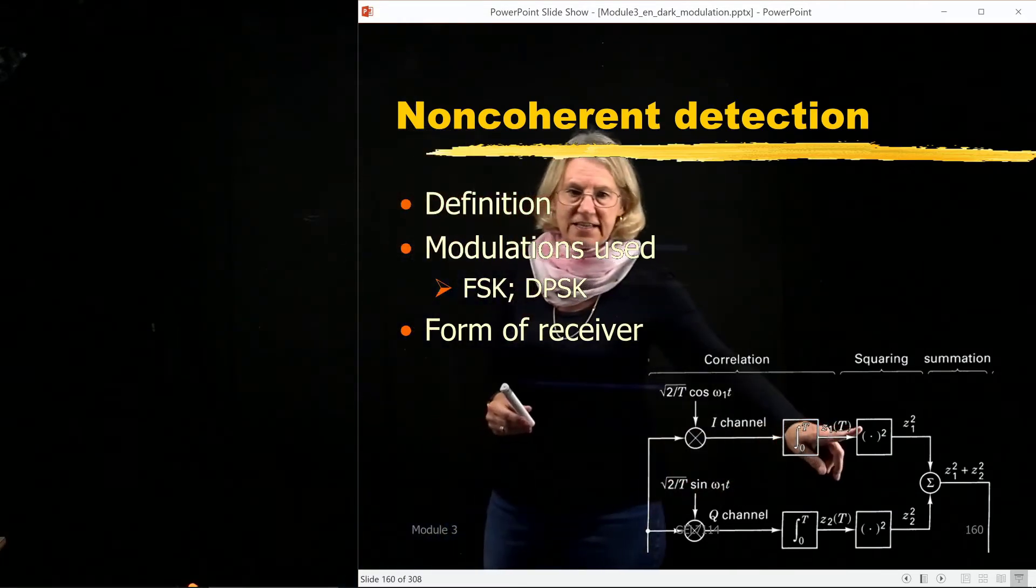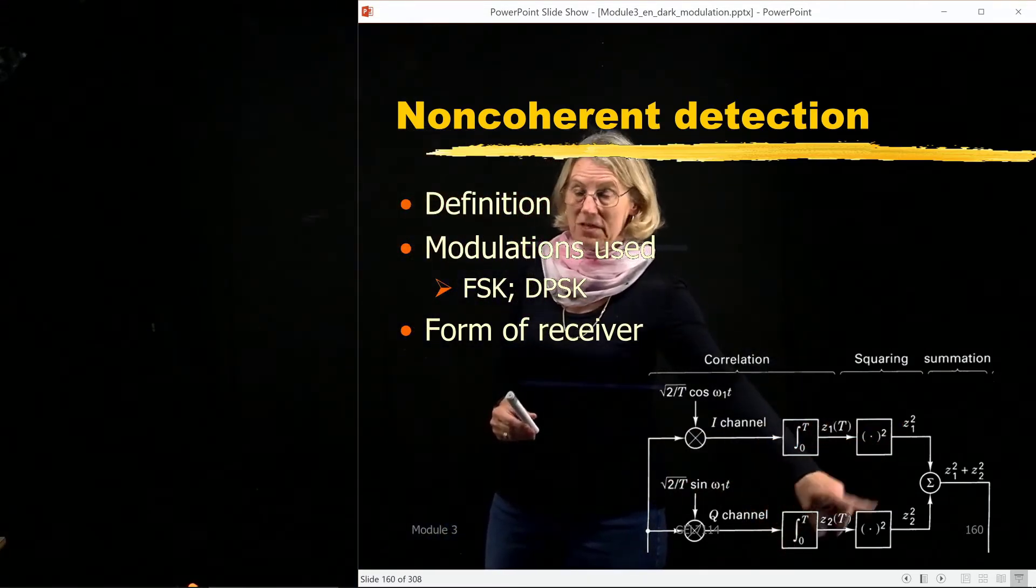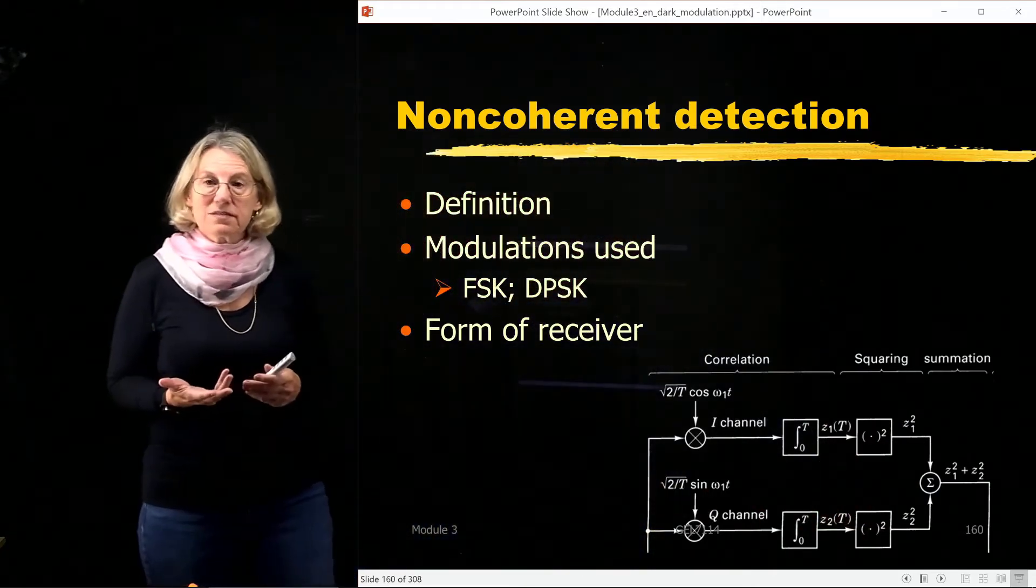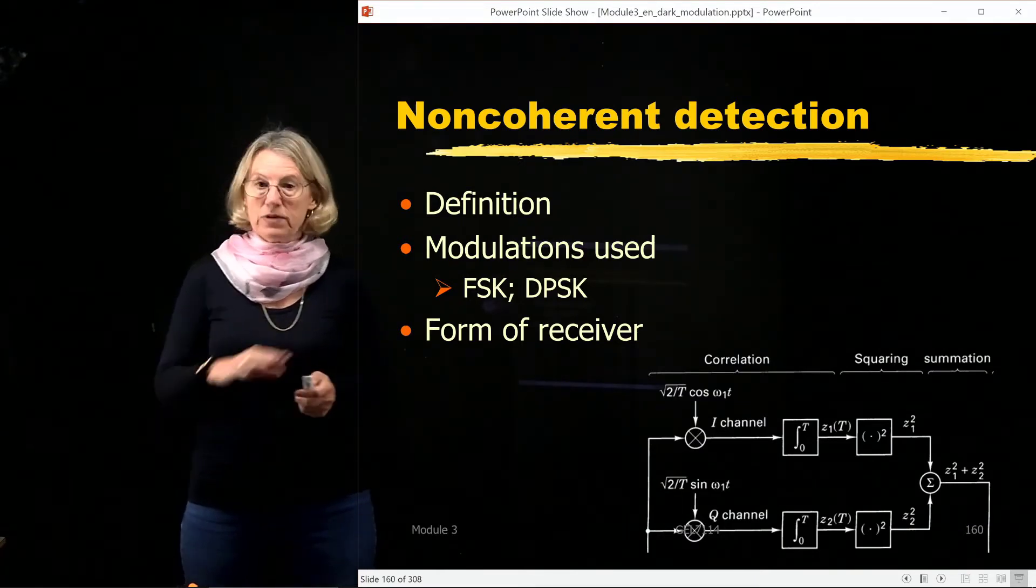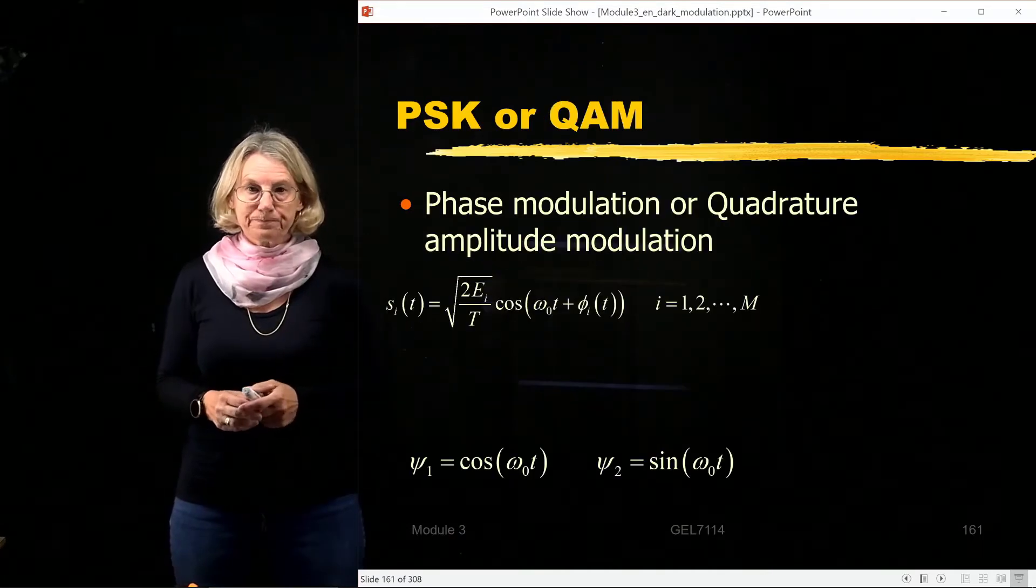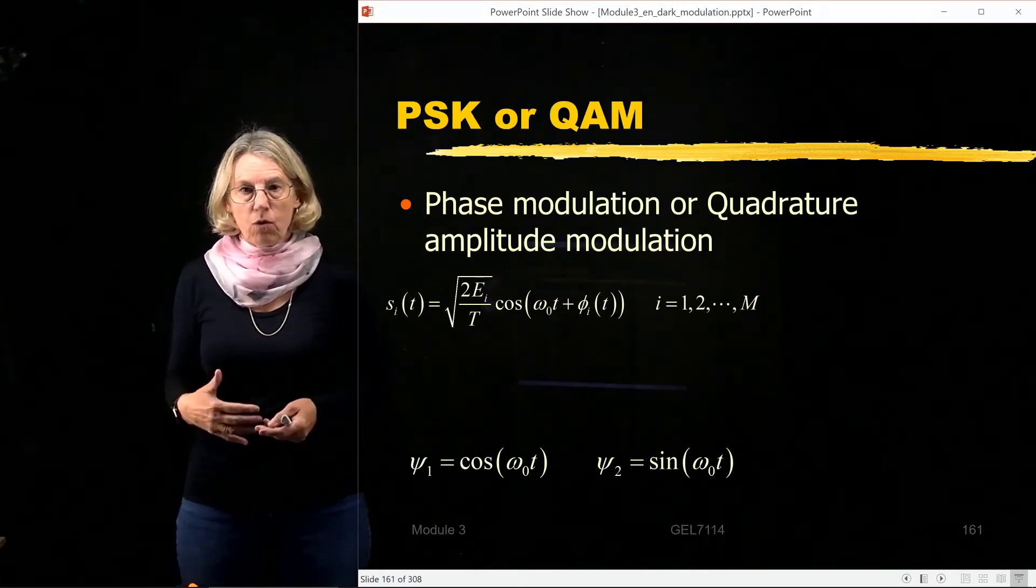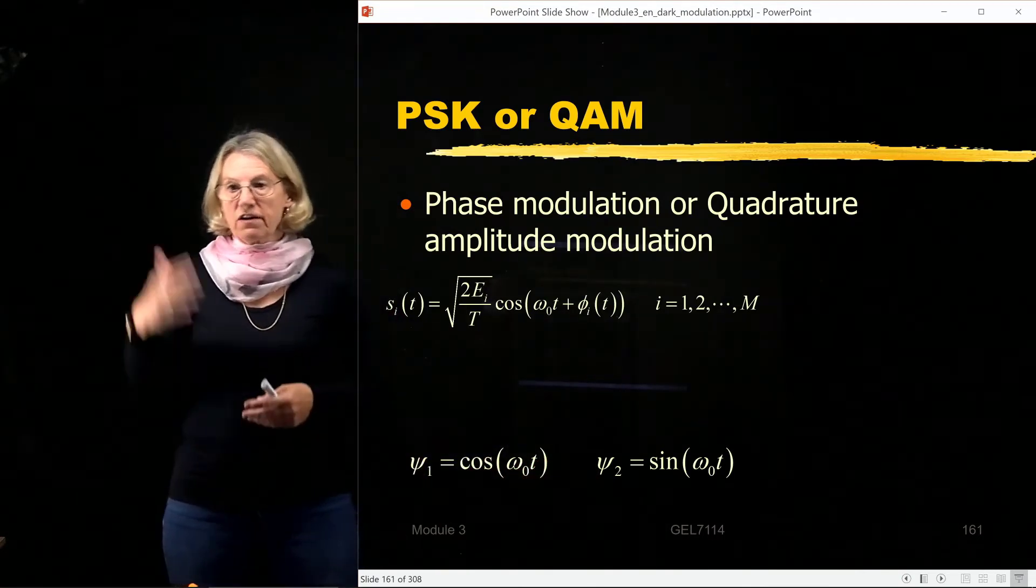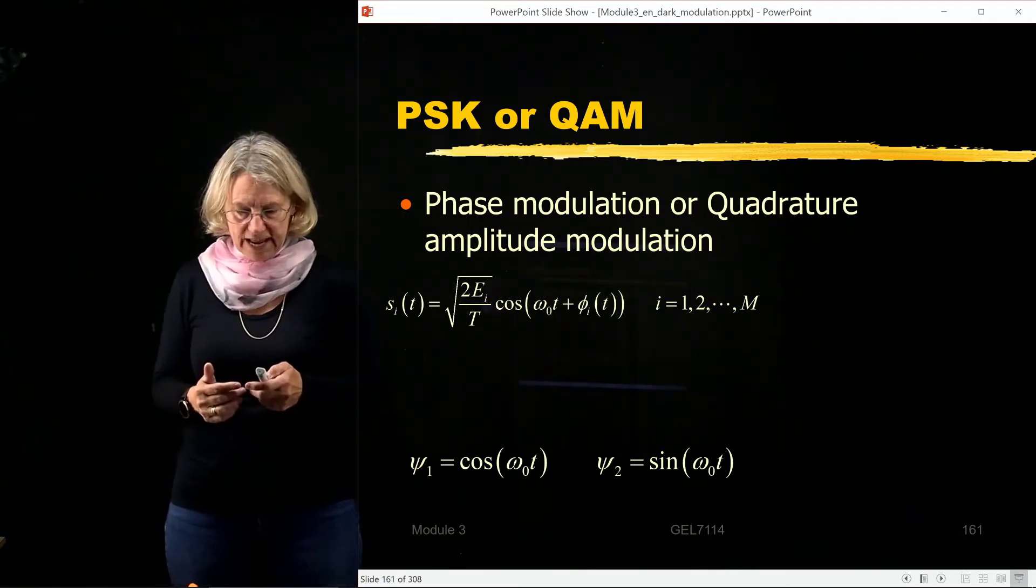And why would that be something interesting? Let's take a look at what happens when we don't know the phase and we still try and use this approach of demodulation. So let's say PSK or QAM even, they both use these basis vectors, which are the cosine and sine branches, like I was talking about just now.